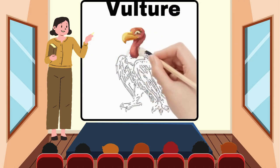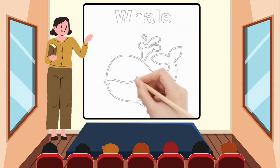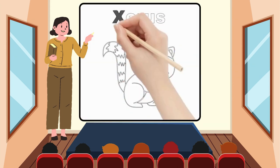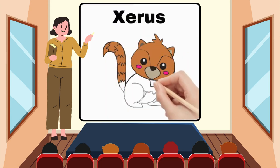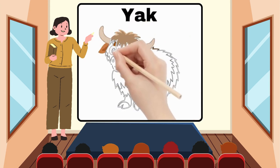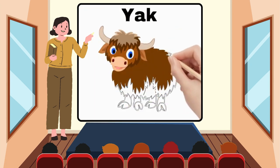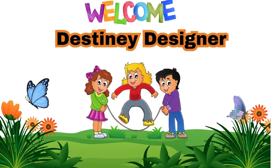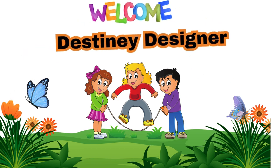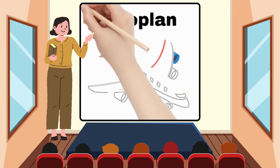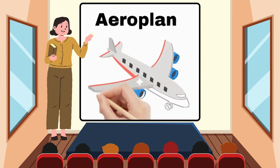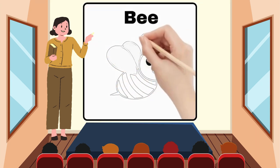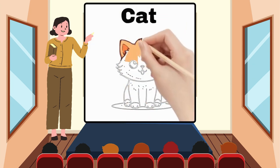V for Vulture. W for Whale. A for Airplane. B for Bee. C for Cat.